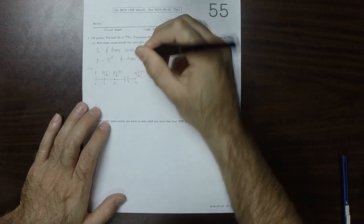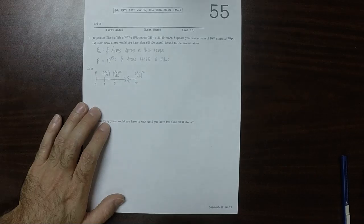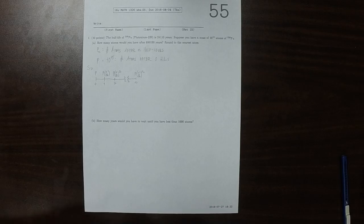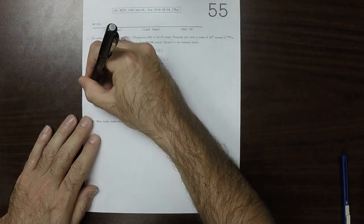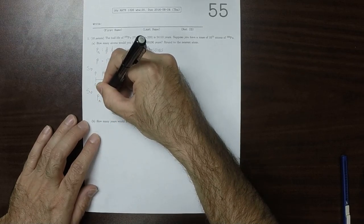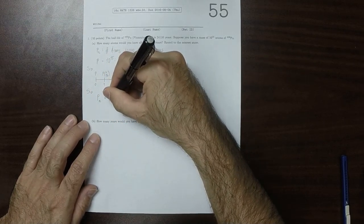And then after N half-lives, we'd have P multiplied by half to N. So after every half-life, we have half of the previous amount of atoms.